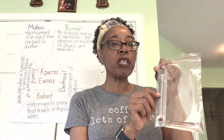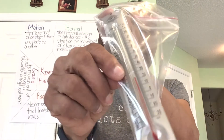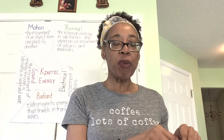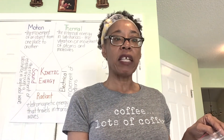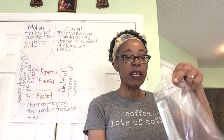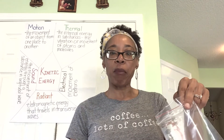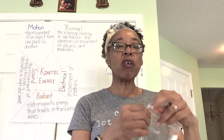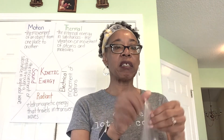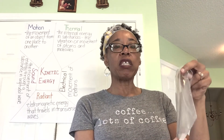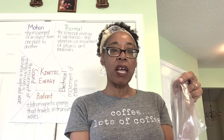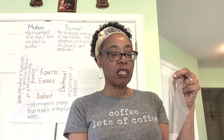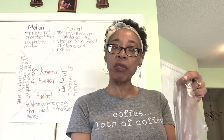We placed the thermometer in and let it sit for a moment. The temperature is about 73 degrees Fahrenheit. Next, we are going to add in our calcium chloride. Carefully pour it in and leave the thermometer in the bag. We are going to wait approximately 30 seconds, then take the temperature again. At the same time, have your students observe and feel the water and record their observations.